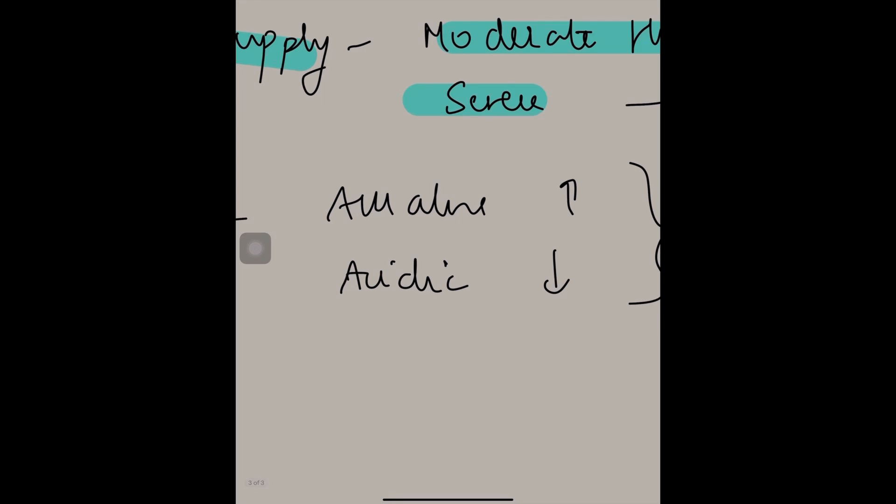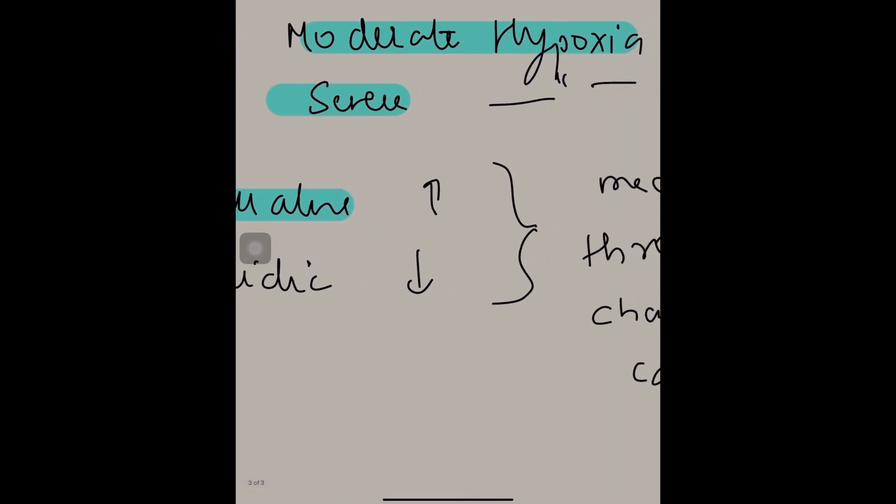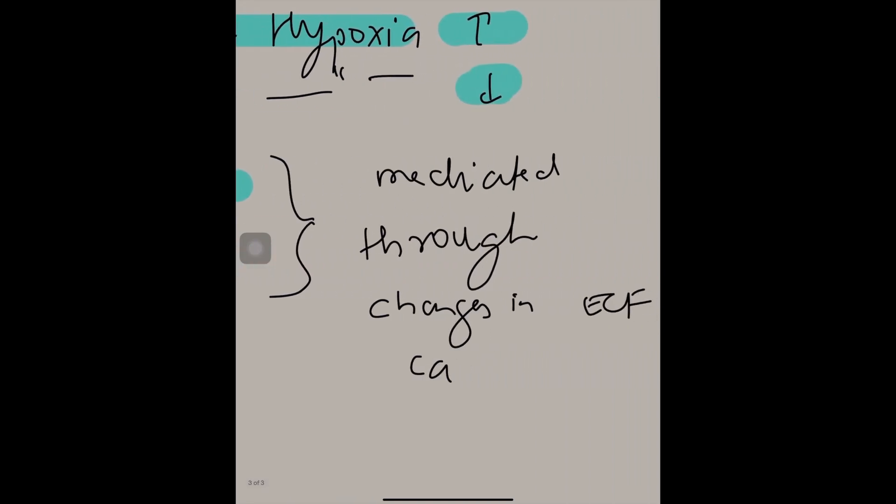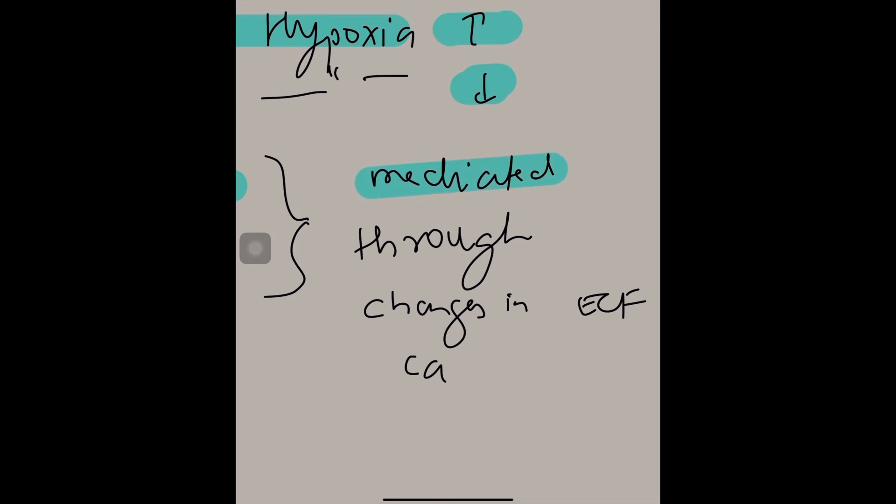Next is pH. Alkaline pH increases excitability. Acidic pH decreases excitability. Why does this occur? This is mediated through changes in ECF calcium. So that is factors affecting excitability.